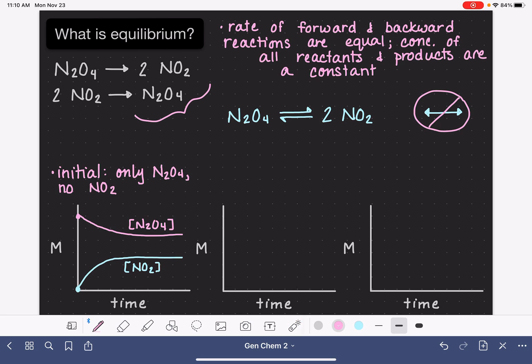What if we had the opposite situation happening? So what if our initial condition was that we only had NO2, and we did not have any N2O4? What would that look like? Well, if we had no N2O4, that means our N2O4, which I'm drawing in pink, would start down on the bottom, and we only had NO2, let's say maybe we start with like this much NO2 here.